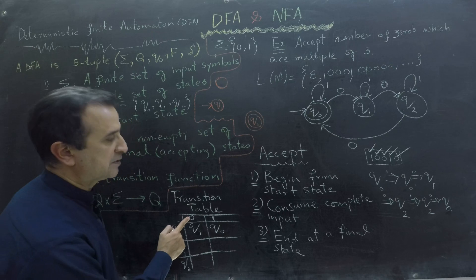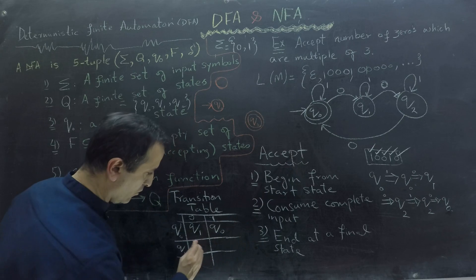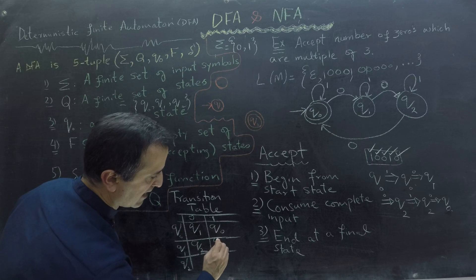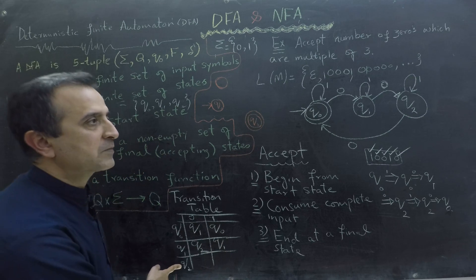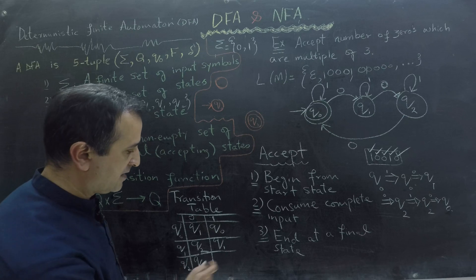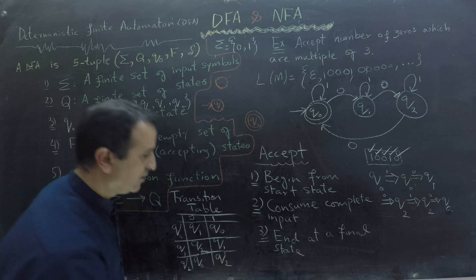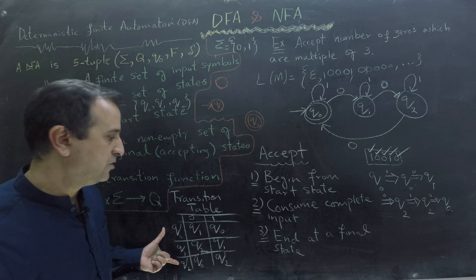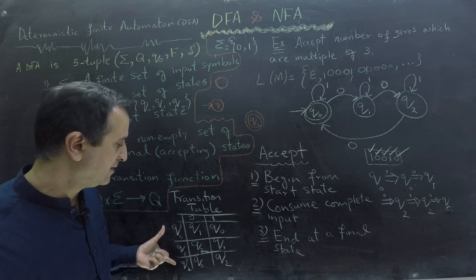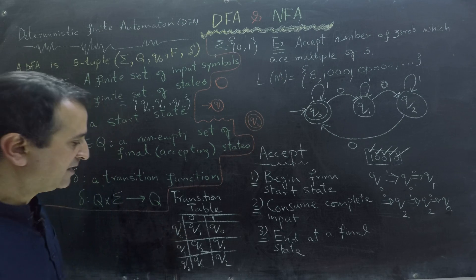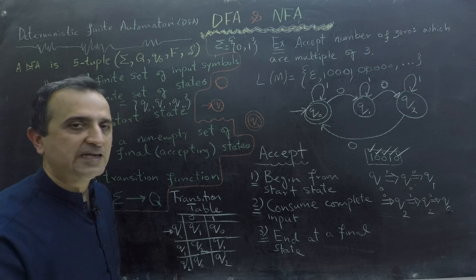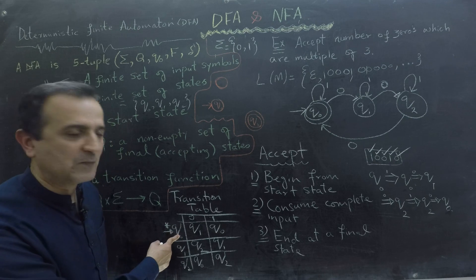If I am at Q1 and read 0, I go to Q2. If I am at Q1 and read 1, I stay at Q1. If I am at Q2 and read 0, I move to Q0. Otherwise, I stay at Q2. With a transition table, you also need to know the start state and final state, so people add special symbols: an arrow for the start state and a star sign for the final state. This indicates that Q0 is both my start state and my final state.